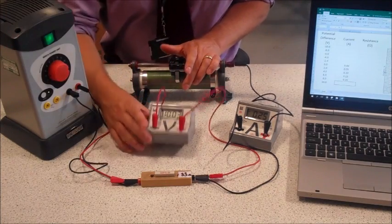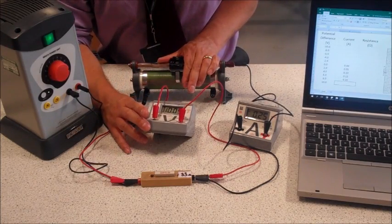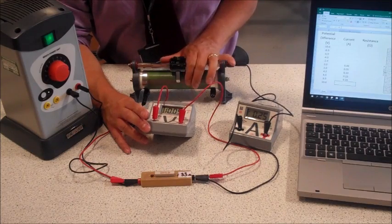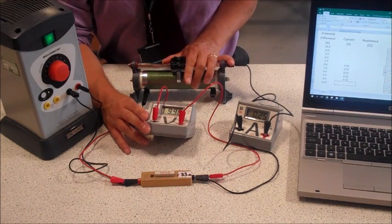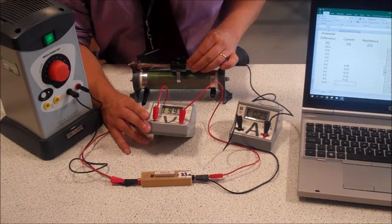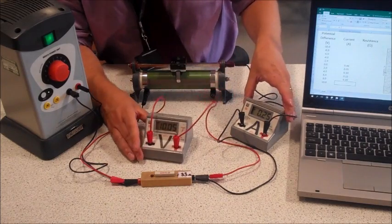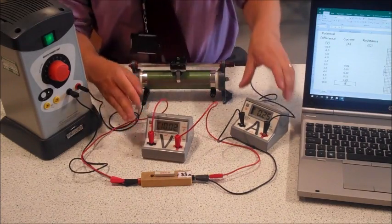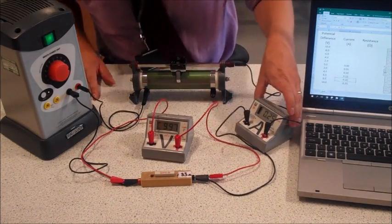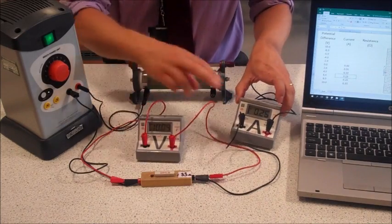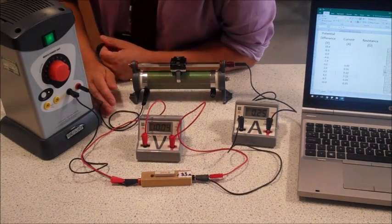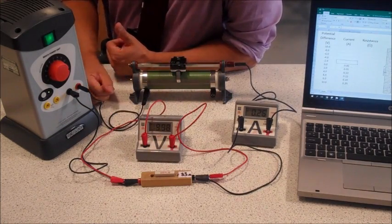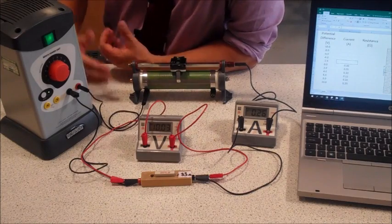And then we'll go up to our final value of 10 volts. And we've got about 0.25 amps. It is changing a bit but yeah, 0.25 amps. Okay, so we've done our positive potential differences. Now what we need to do is reverse the current which will reverse the potential difference.